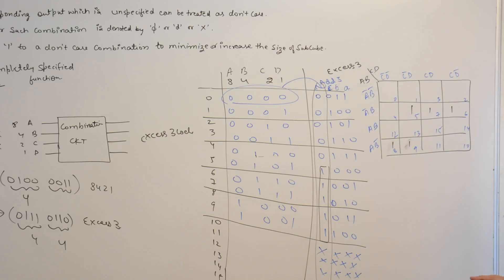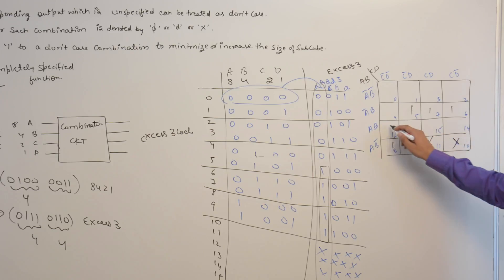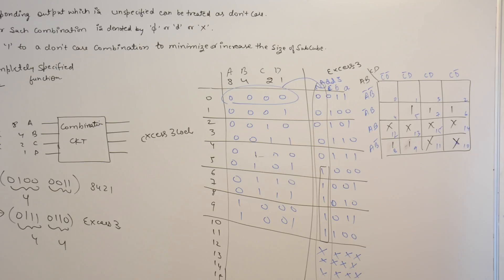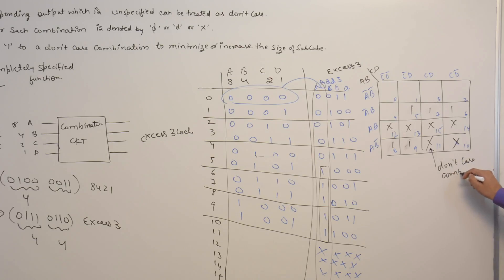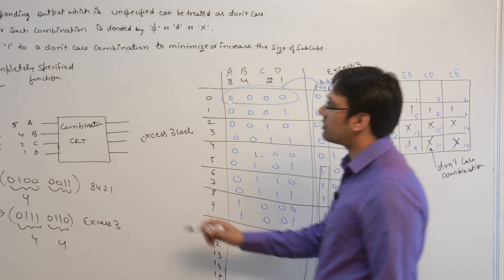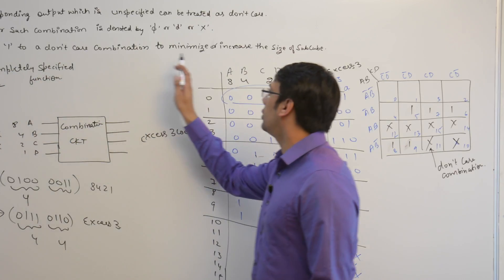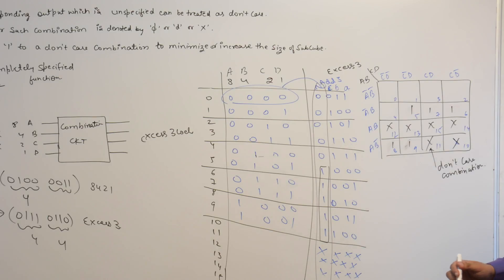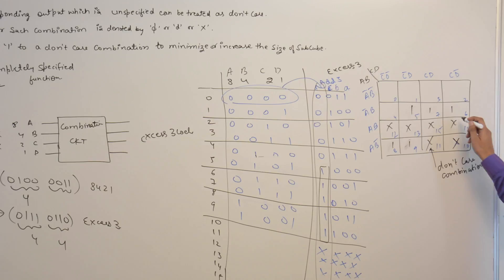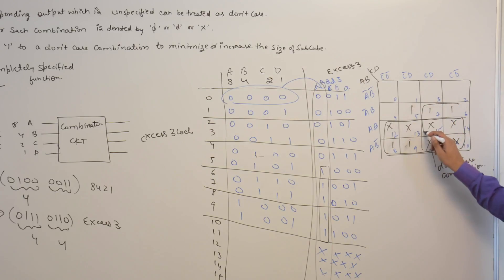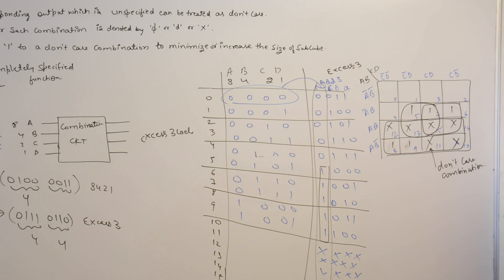The function is not specified for values 10 to 15, so those locations are don't care combinations. We can assign 0 or 1 to these don't care locations to minimize or increase the size of a subcube. By increasing the subcube size we can minimize the number of literals representing that subcube. We can form subcubes using the don't care positions to get larger groupings.